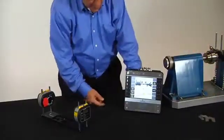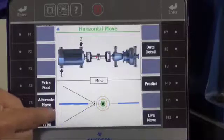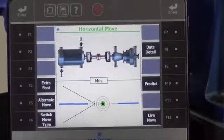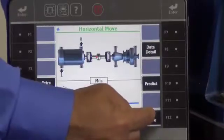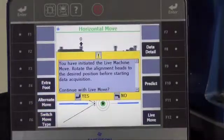We're not going to do that. We're going to press F6 to move to the horizontal move. In this case there's not a lot of misalignment showing, however we're going to press live move to demonstrate that, then press enter.